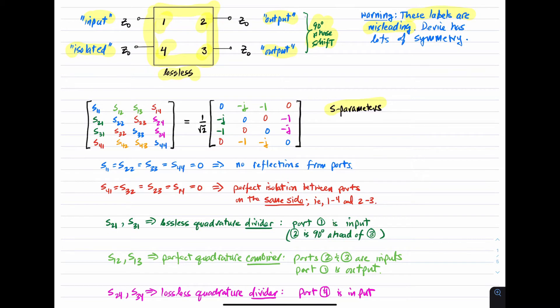The S-parameters S12 and S13 are also non-zero. These two parameters describe the behavior of this four-port as a quadrature combiner. So here we're talking about ports two and three as inputs and port one as the output. And we see that the inputs are being combined with equal magnitude and a phase shift of 90 degrees.